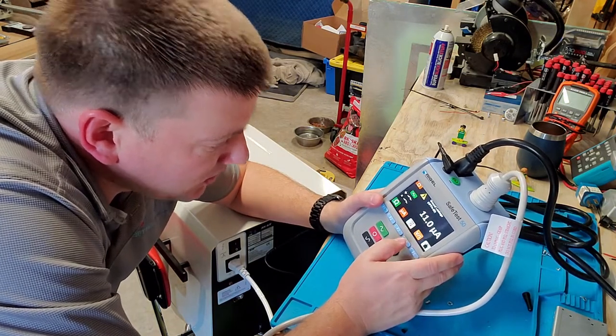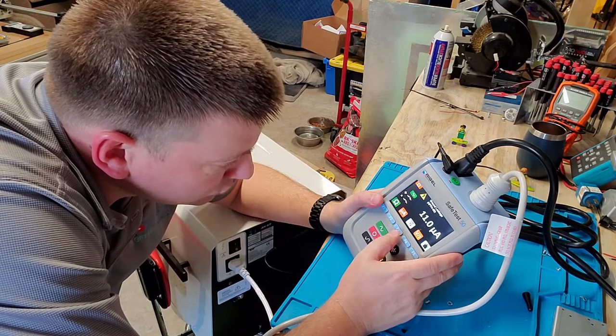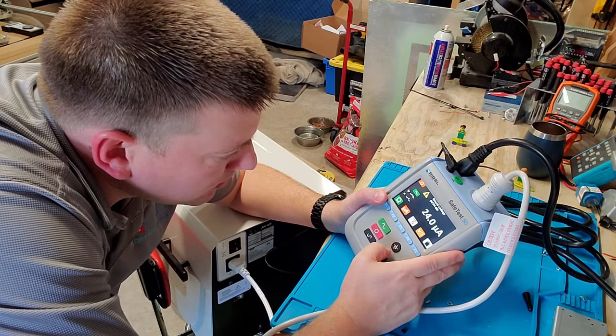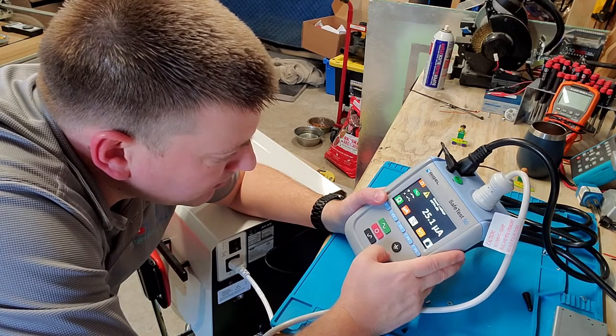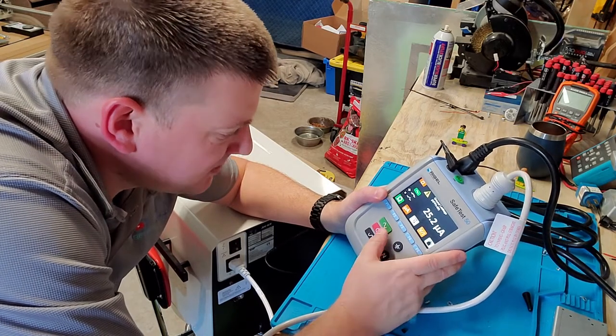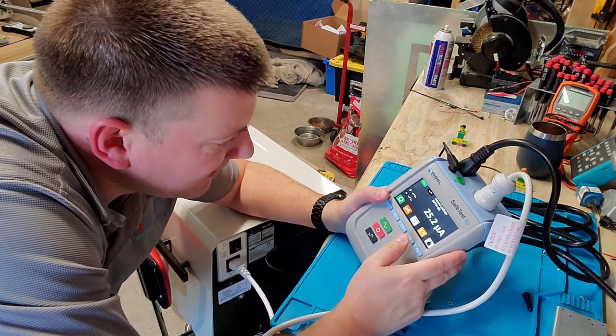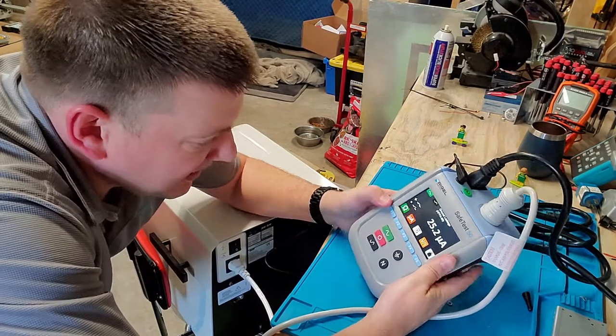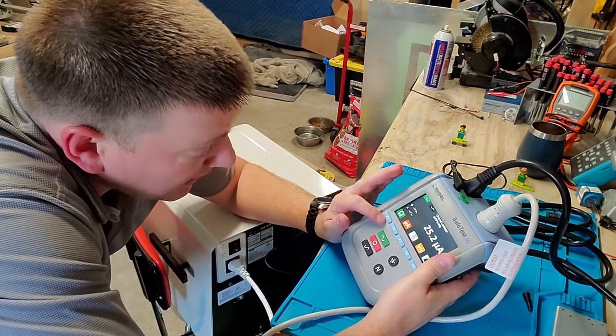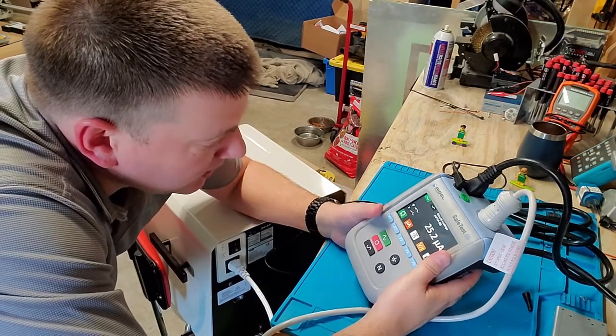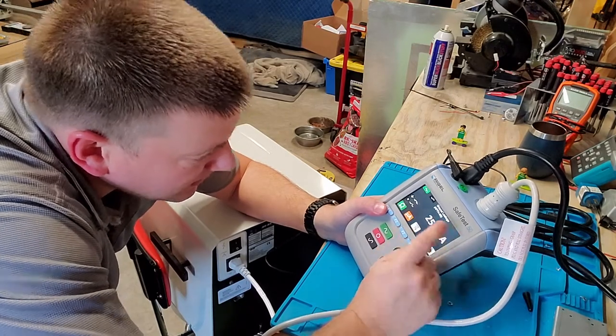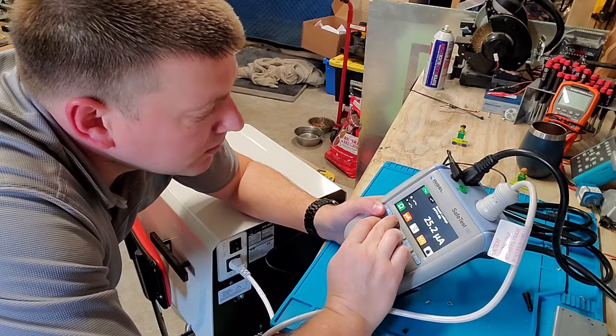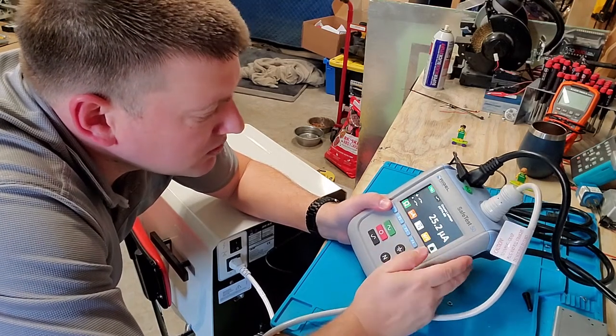The only time I would ever see this be different is if there is a fault condition someplace. Kind of a cool little menu, not necessary for an electrical safety but it's very cool that it's all laid out right there on one page. So I can go back to that menu, that's for chassis leakage. Now we can go to ground leakage. The only one in the United States for NFPA that's necessary is to first do your ground and then to do your chassis leakage.